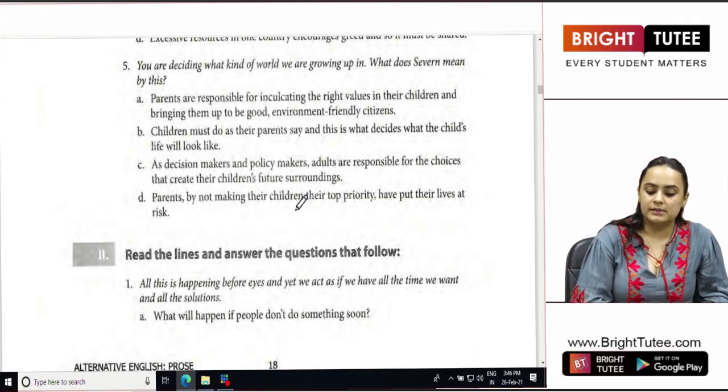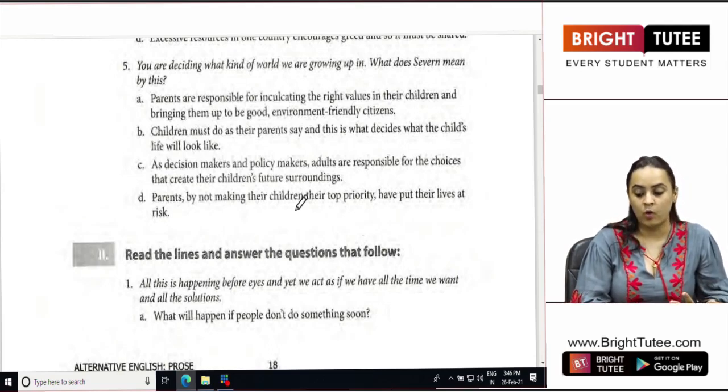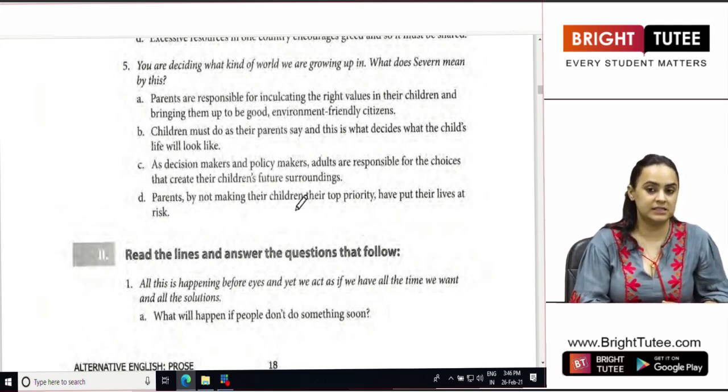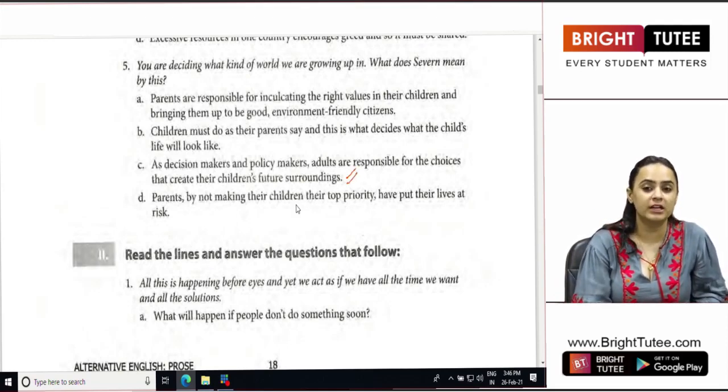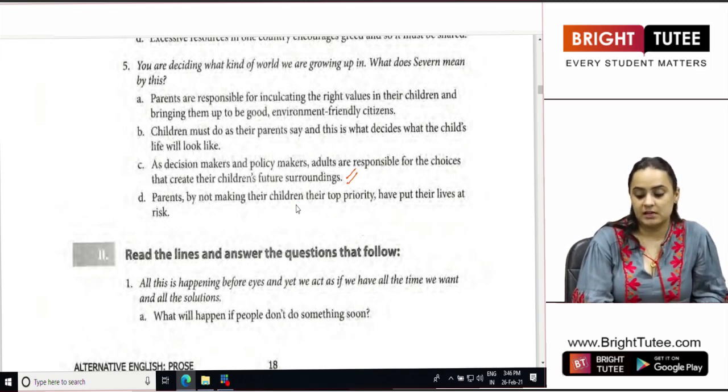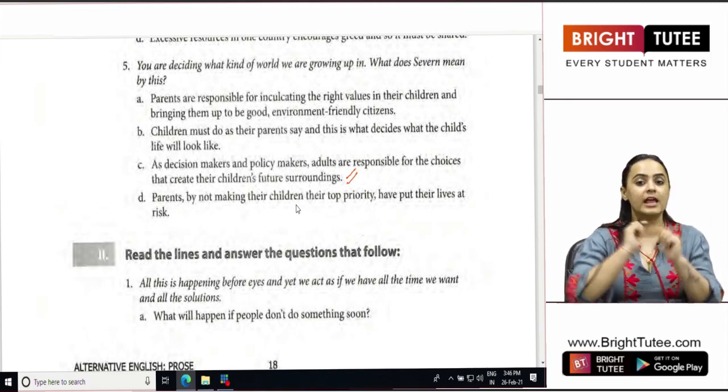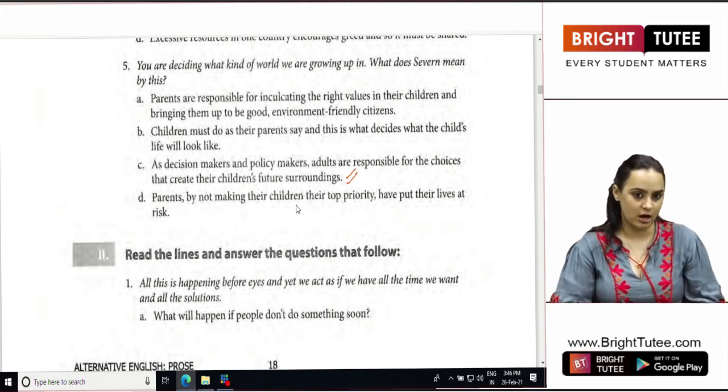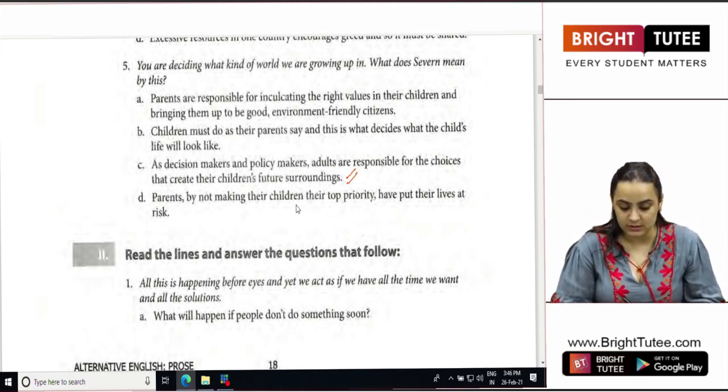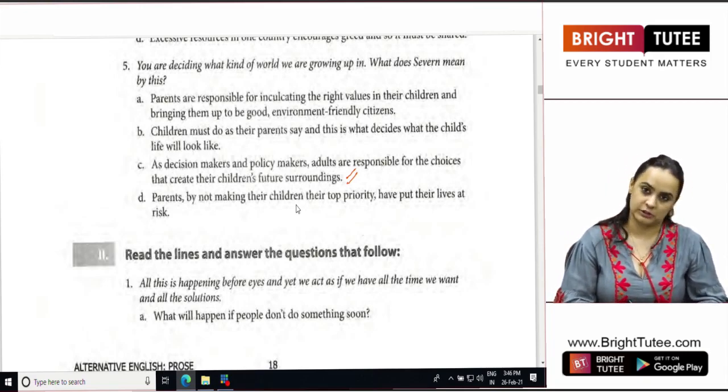You are deciding what kind of world we are growing up in. What does Severn mean by this? So who is she talking about? She is talking about the decision makers, the policy makers, the adults who are actually responsible for everything that is going around. And they are actually responsible for deciding and for brightening up the future of the children.